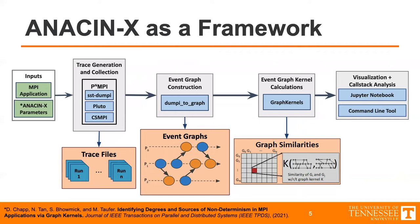The graph model allows us to perform mathematical operations and apply mathematical tools to the data. Specifically, in AnsonX we apply kernel calculations to the event graphs. In this third stage, the kernel calculations are used to provide a proxy metric for the similarities between the event graphs and correspondingly the similarities between the runs of an application. Finally, in the fourth stage, AnsonX comes packaged with tools for visualization and analysis of the data encoded in the kernel calculations.